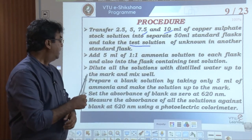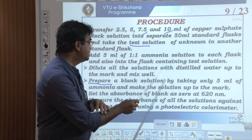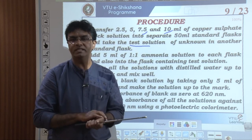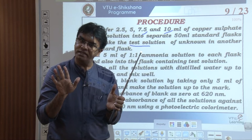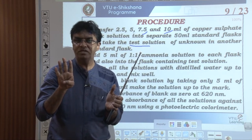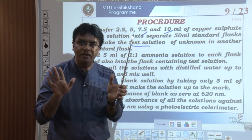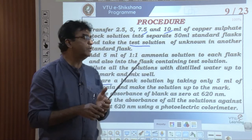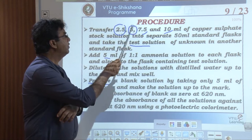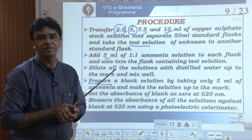Altogether we take six 50 ml flasks. First four flasks contain 2.5, 5, 7.5, and 10 ml of copper sulphate solution. Flask five contains an unknown amount of copper sulphate. Flask six contains only 5 ml of 1:1 ammonia — this is the blank. Then to each of the six flasks we add 5 ml of 1:1 ammonia. The moment ammonia is added, it reacts with copper sulphate forming cuprammonium ion, and the light blue color changes to deep blue.